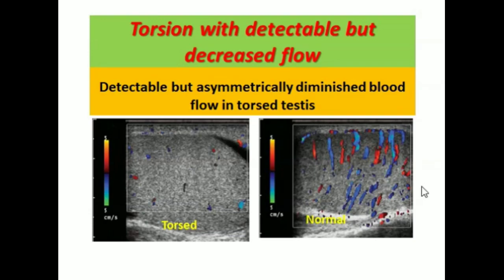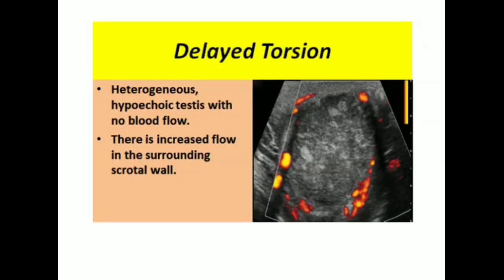The normal testis shows a normal appearance of vessels. The torsed testis also shows some vascularity, but by comparing the vascularity of the two testes it appears low and asymmetrical, which is also diagnostic for torsion. If the torsion is delayed and more than 24 hours have passed, the testis will be heterogeneous and hypoechoic with no blood flow, but sometimes reactive increased blood flow will be appreciated in the scrotal wall.